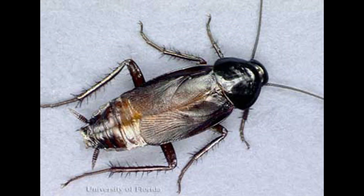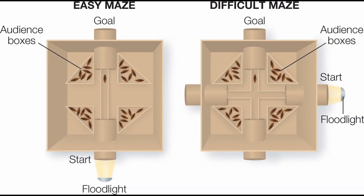Zajonc demonstrated support for this theory in one of the classic social psychology studies — one of his favorites because instead of using typical college students, Zajonc enlisted 72 female cockroaches, Blattis orientalis, to run an easy or difficult maze. In addition to maze difficulty, Zajonc manipulated whether the cockroach ran the maze with an audience of other cockroaches in clear boxes adjacent to the maze, or without an audience. The final factor was whether cockroaches ran the maze alone or paired with another cockroach.